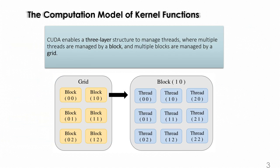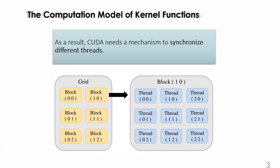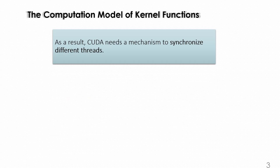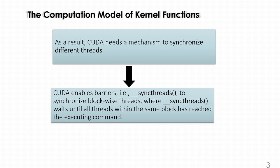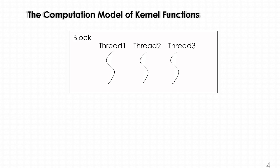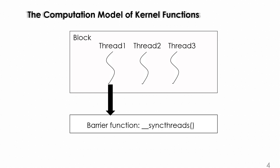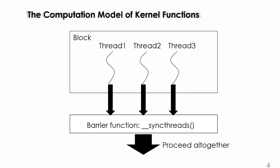CUDA enables a three-layer structure to manage threads, where multiple threads are managed by a block and multiple blocks are managed by a grid. As a result, CUDA needs a mechanism to synchronize different threads. CUDA enables barriers to synchronize block-wise threads. When the three threads within the same block have reached the barrier function, they will proceed together.